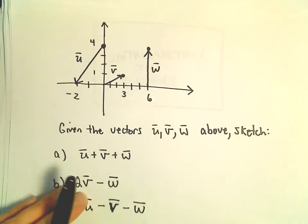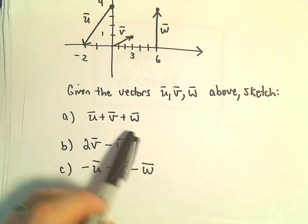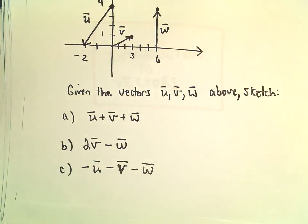So what we're going to do is sketch some new vectors based on those vectors. So in part a, we're going to look at u plus v plus w.